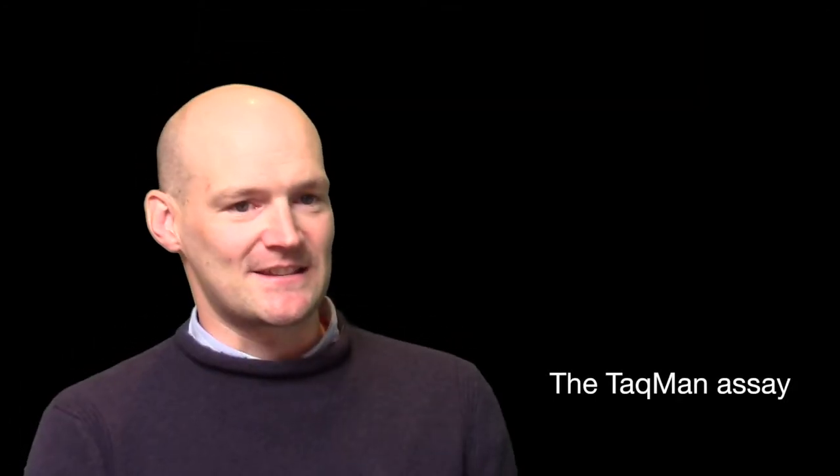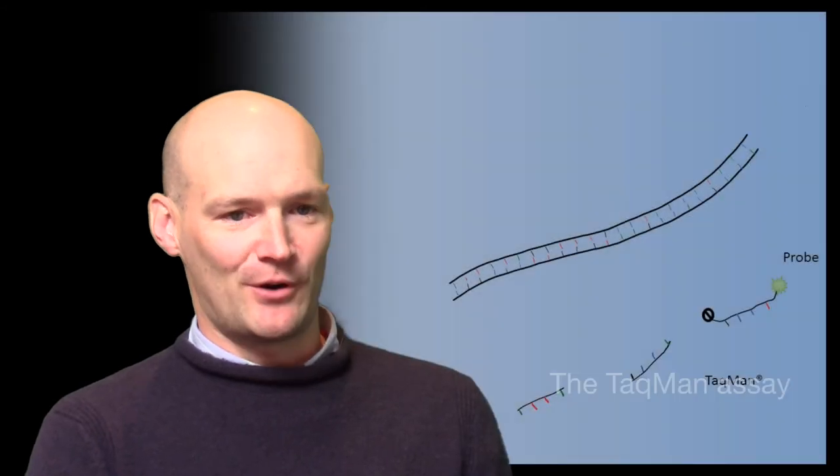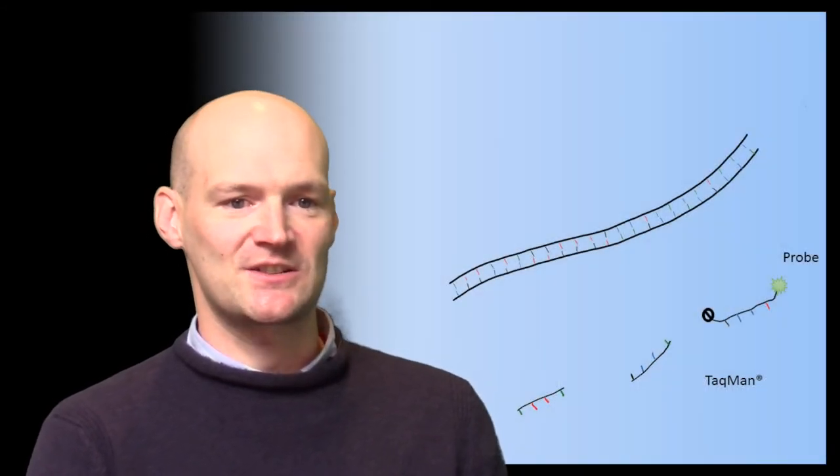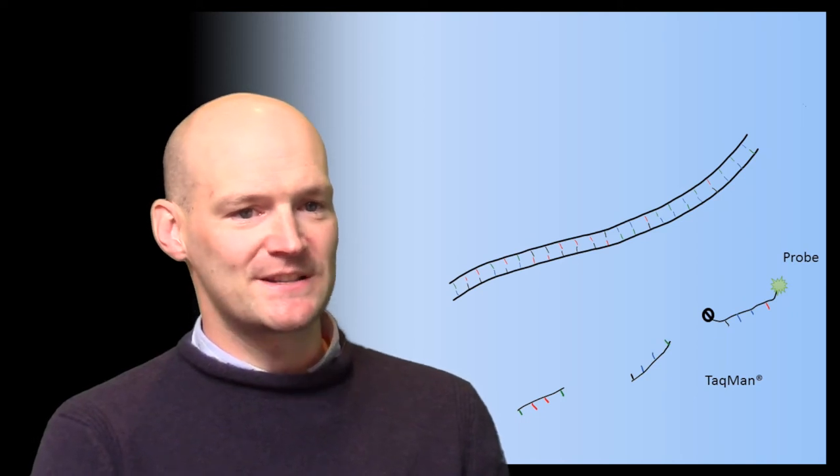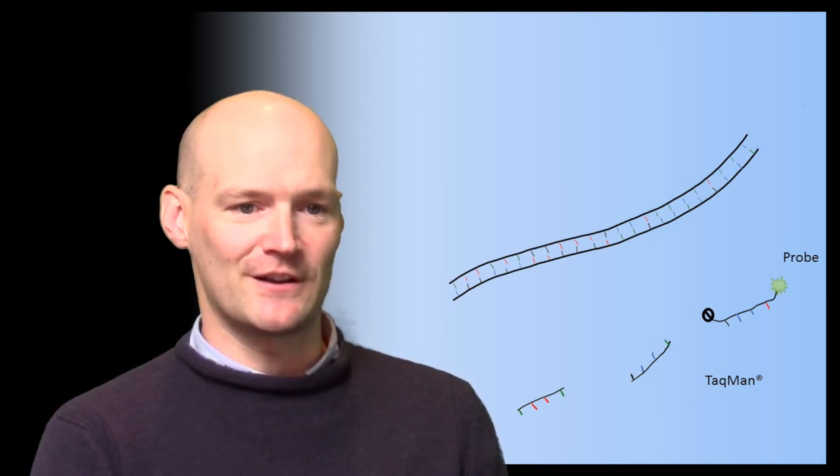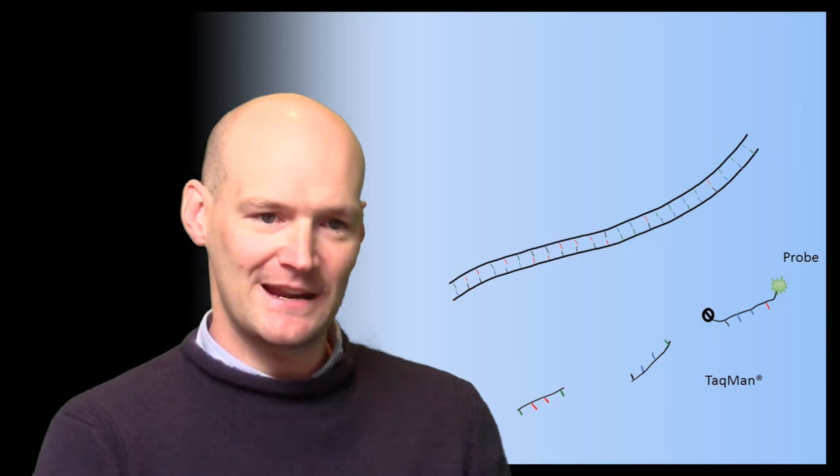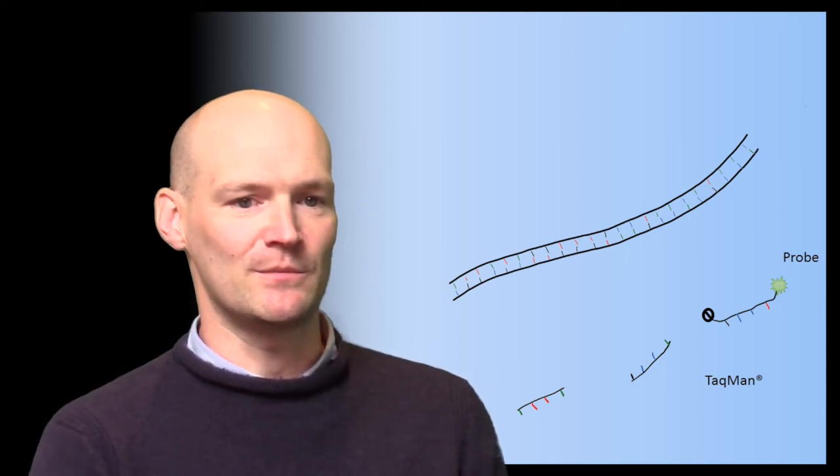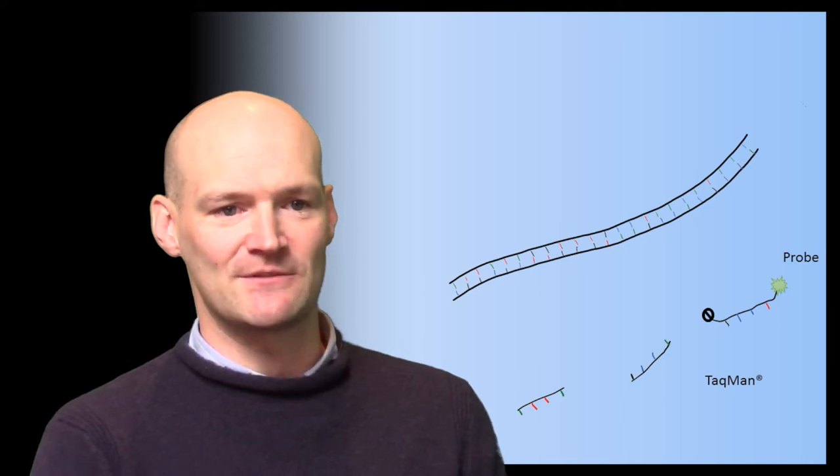The second, the TaqMan assay, includes a special fluorescent probe, which is a DNA strand, just like the primers, complementary to a section within the amplicon. The probe contains a fluorophore at one end to provide the fluorescent signal, but this is prevented from releasing its fluorescence by its proximity to a quencher molecule on the other end of the probe. This absorbs any light that's released from the fluorophore.